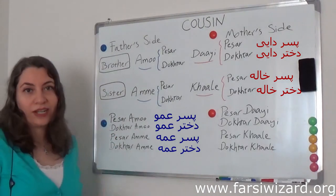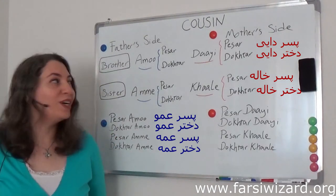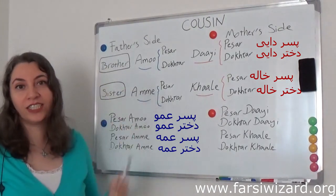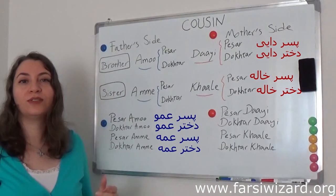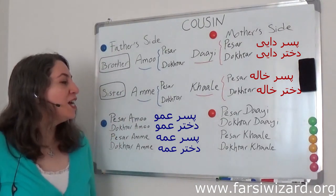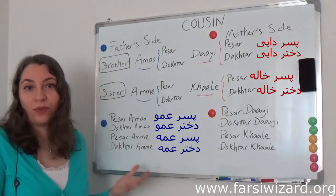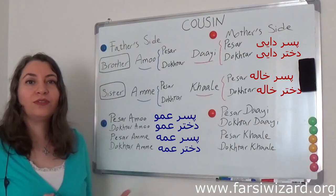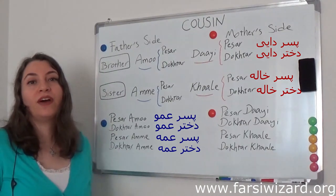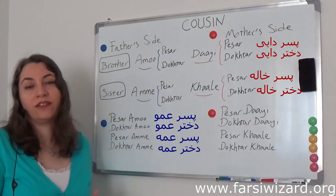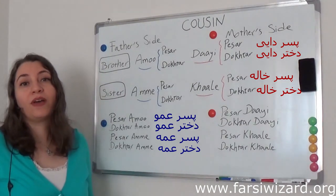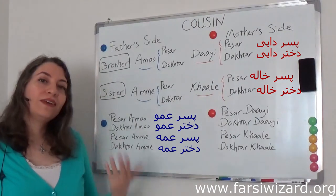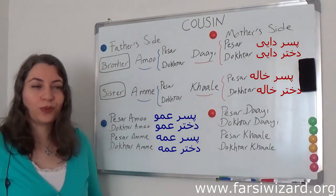I know it's a little bit complicated because we have too many words for just 'cousin,' and many of my students always nag about this. But that's how it works in Farsi — we are very careful with specifying family relationships because family is very important for us, so we have a different approach to it.